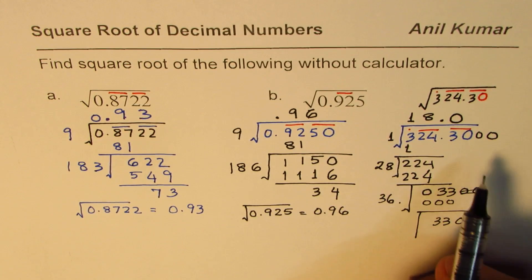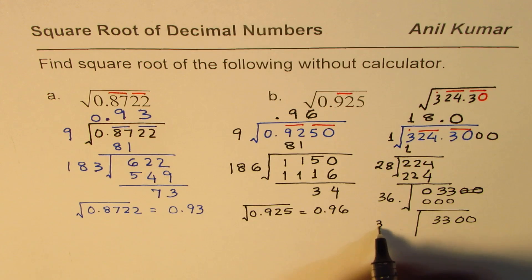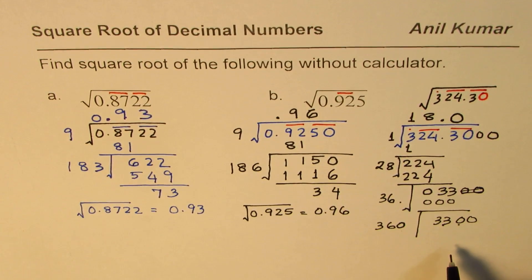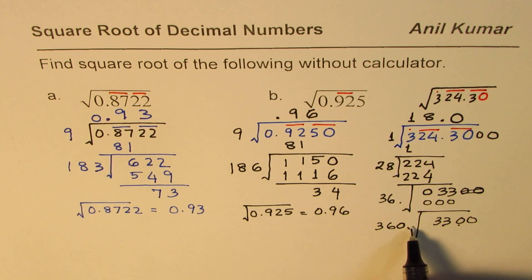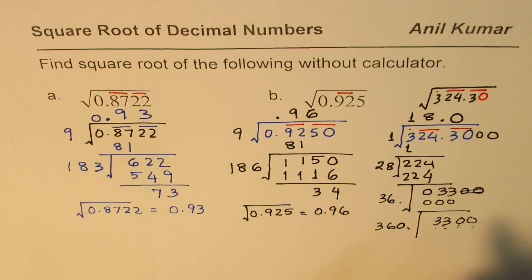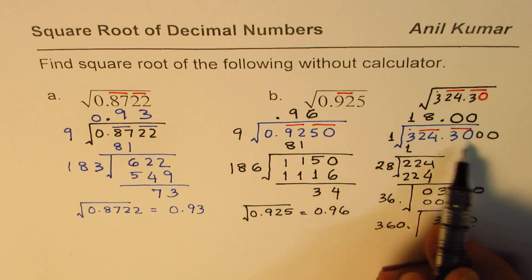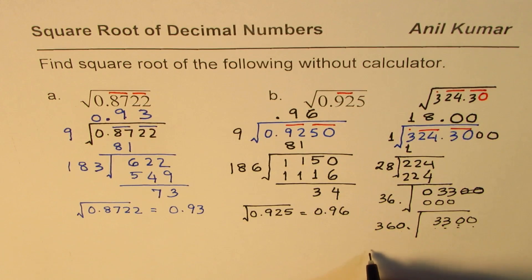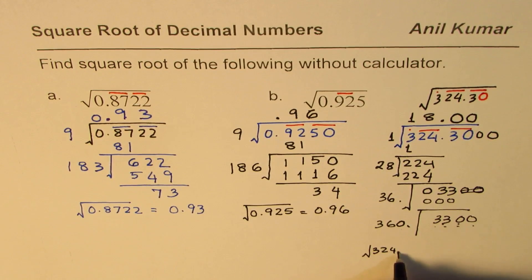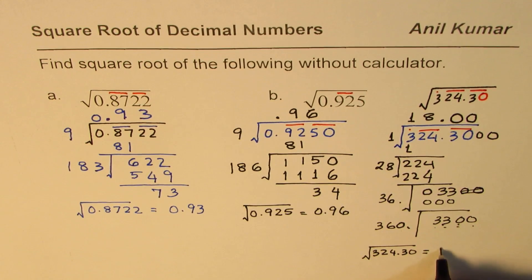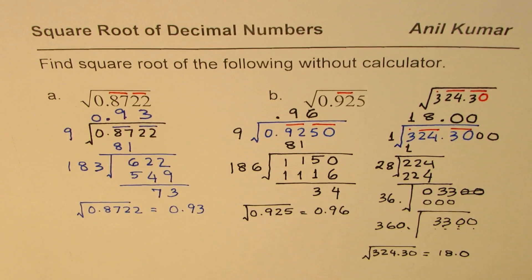We divide by twice 180 which is 360. Replacing a digit: if we put 1, we get 3601, which is still bigger than 3000, so we get another zero. The square root of 324.30 is approximately 18.0. So the square root of 324.3 equals 18.0. That is how you group the numbers and find the square root. I hope the steps are absolutely clear — feel free to write your comments. Thank you and all the best.